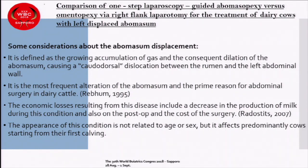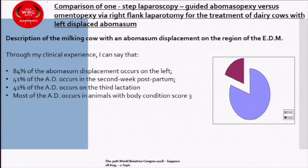The appearance of this condition is not related to age or sex, but it affects predominantly post-calving cows. From my clinical experience, I can say that 84% of abomasum displacements occur on the left; 41 of 80 cases occur in the second week postpartum; 41 of 80 occur on the third lactation; and most of the cases occur in animals with a body condition score of 3.